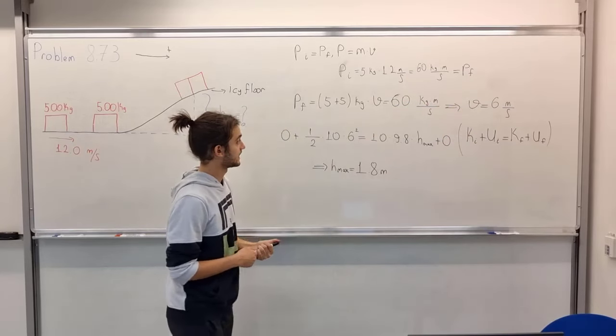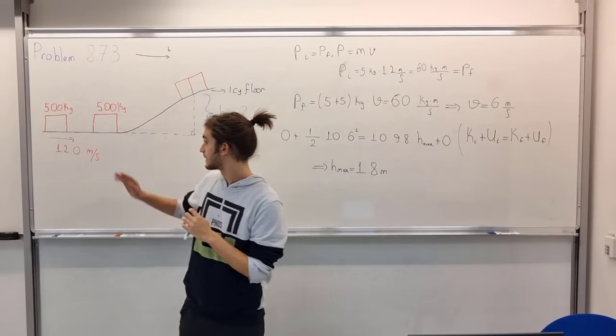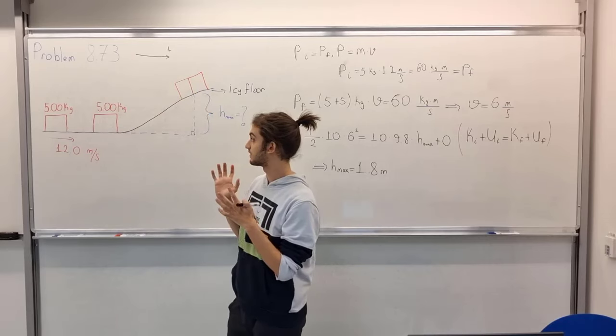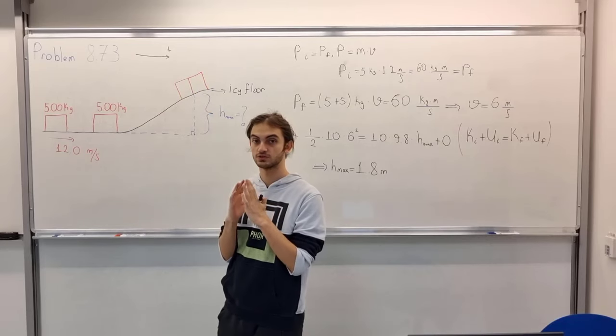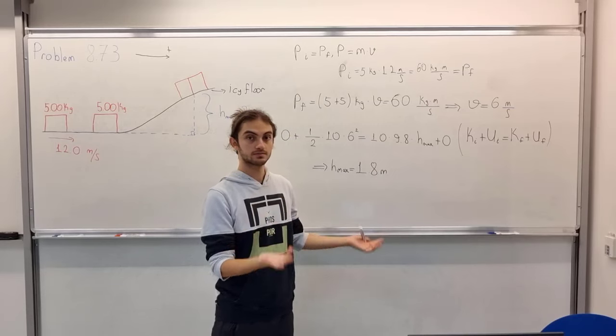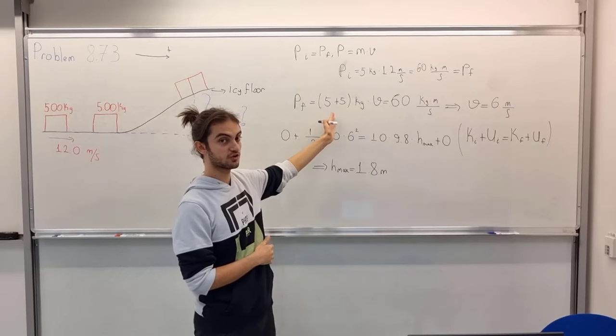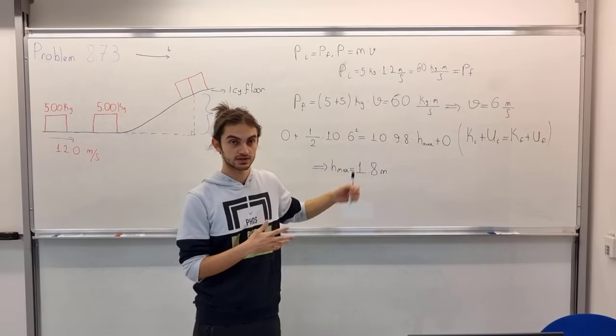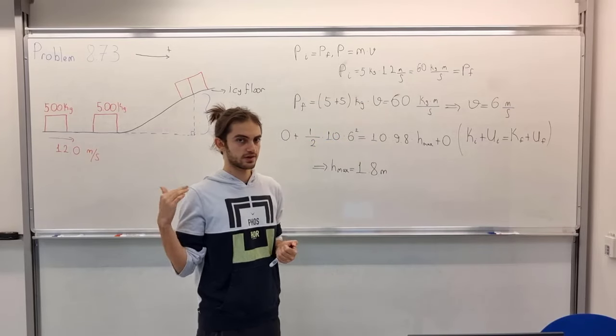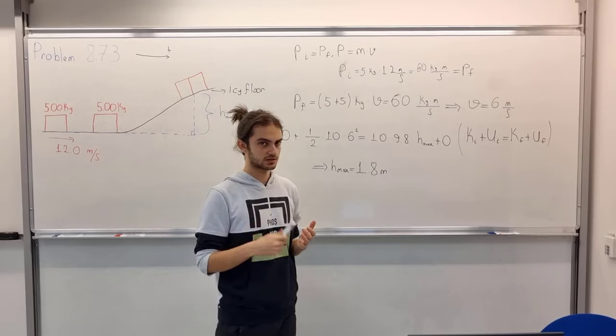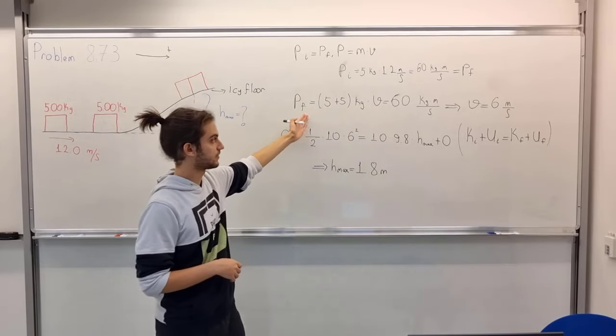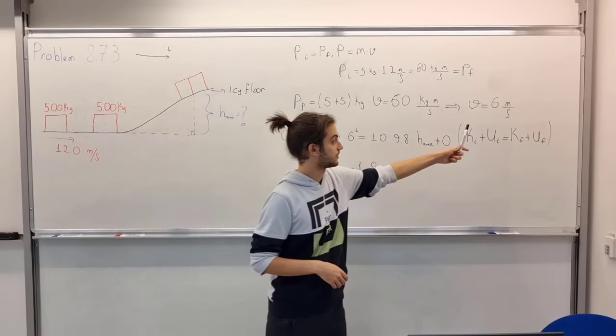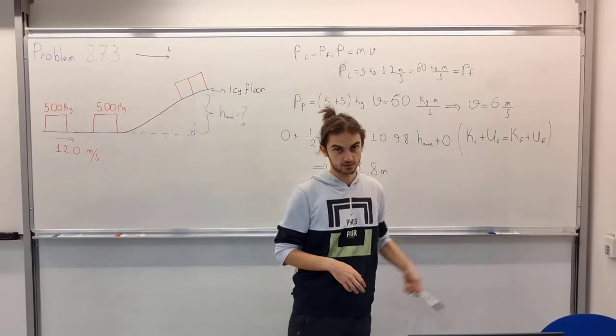Then we have the P final object, the collided object, the two of them who are sticking to each other, has mass of 10 kilograms. That's why I'm writing 5 plus 5 here. Then we have their final speed, but we don't know what speed they are moving with, so we have to calculate that. Since we know P final which is equal to 60 and their mass, we have the speed, 6 meters per second.